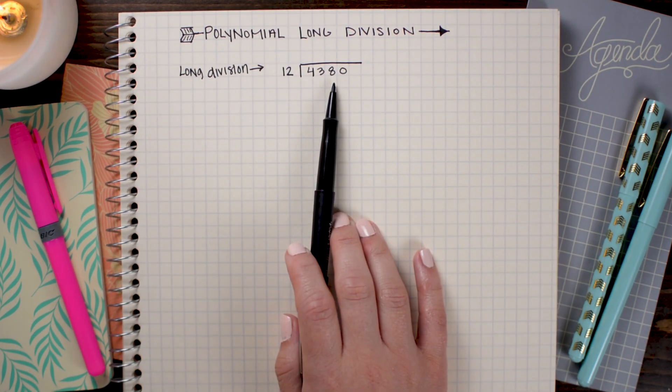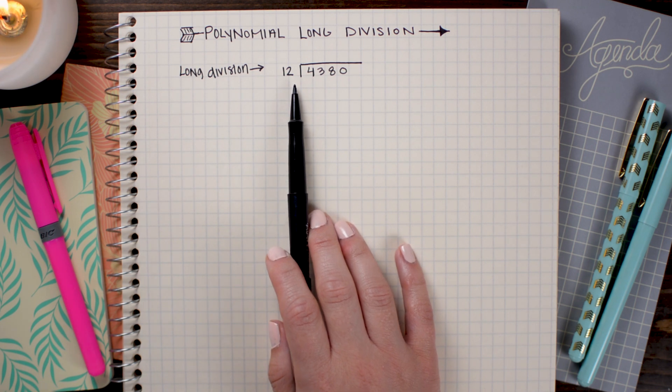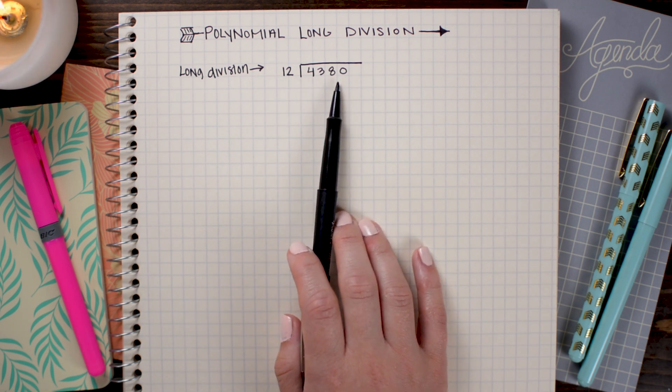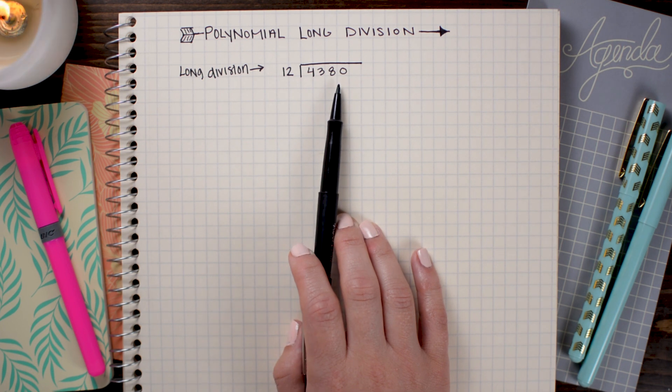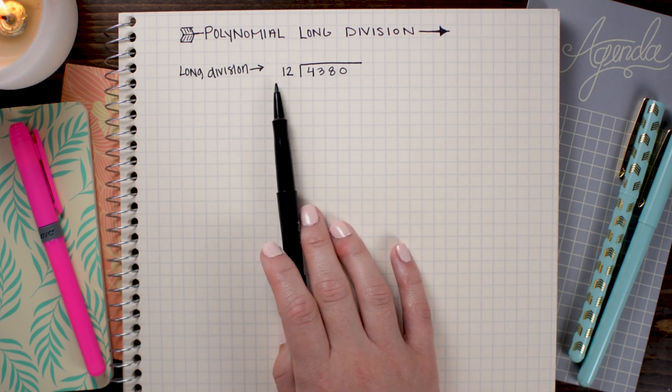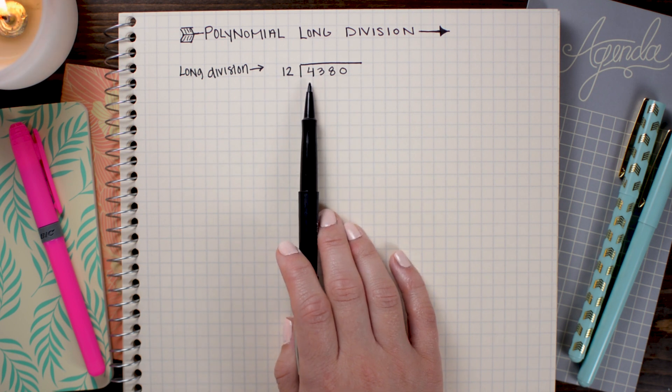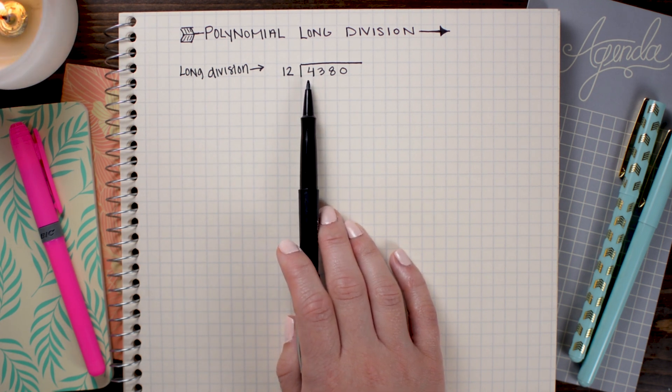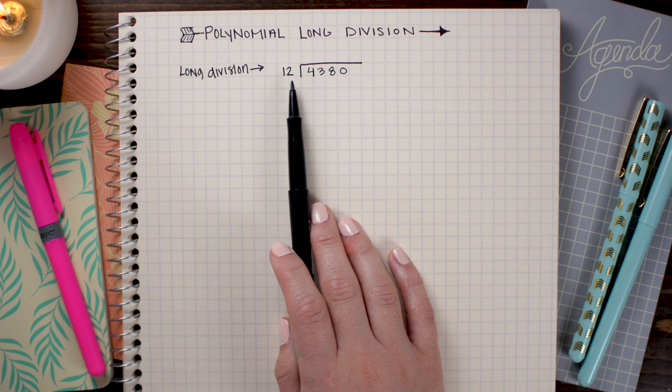Now remember that 12 is called our divisor, and 4,380 is in the place of the dividend. Now we want to begin by seeing how many times we can place our divisor into the first digit of our dividend, and in this case, 12 doesn't go into 4.